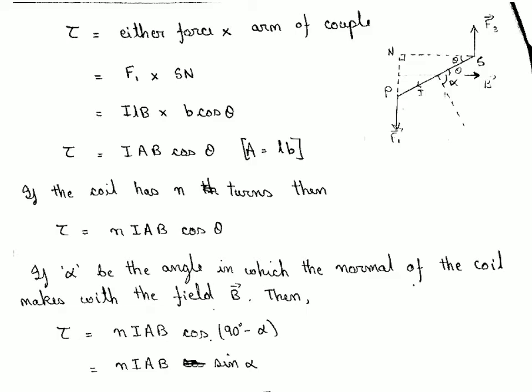If the coil has N number of turns, the torque is tau = NIAB cos theta. This formula is important and will be used in the moving coil galvanometer. Here theta is the angle between the plane of the coil and the direction of the magnetic field. We can also express tau in terms of angle alpha.